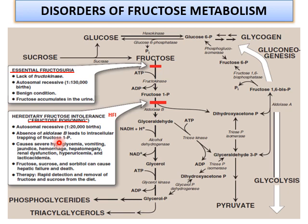Fructose in any form — whether sucrose, sorbitol (a sugar alcohol that can be converted to fructose upon metabolism), or fructose directly — may result in liver failure and ultimately death. The treatment is to rapidly detect fructose concentration in blood and urine and then remove fructose, sucrose, and any other form of fructose from the diet. This is the only reliable solution; enzyme replacement therapy can also be done but its results are not very fruitful.